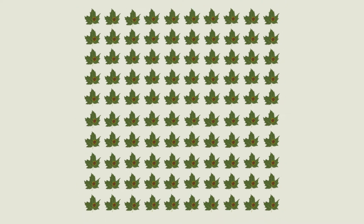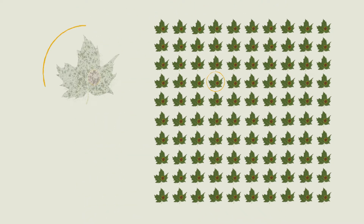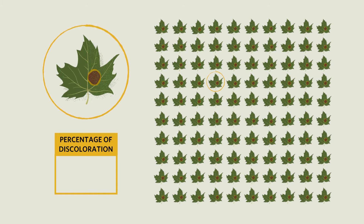Now, let's say the quilt is made up of 100 leaves, and each one of those 100 leaves has one small mark of discoloration. We would estimate the total percentage of discoloration to be about 10% for the total area of the quilt that is discolored.